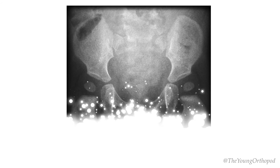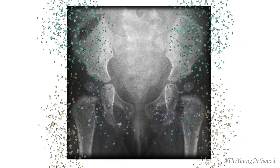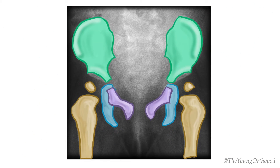X-rays of infants are difficult to interpret because the acetabulum and the femoral head are mostly cartilaginous and therefore not visible on plain x-ray. The x-ray examination is more useful in older infants.